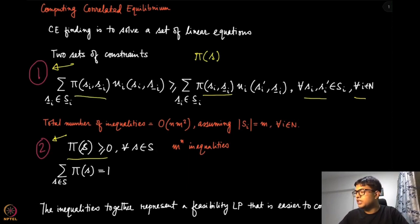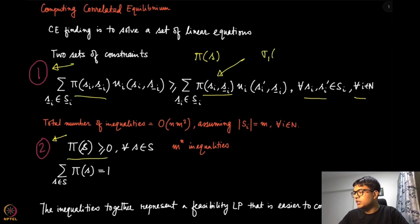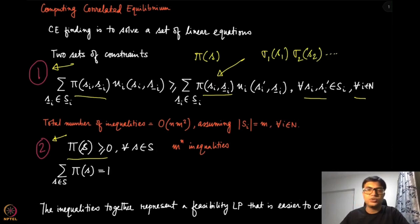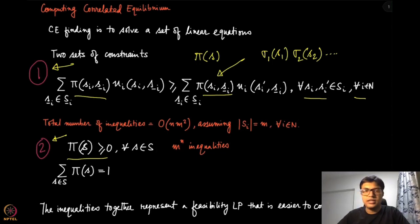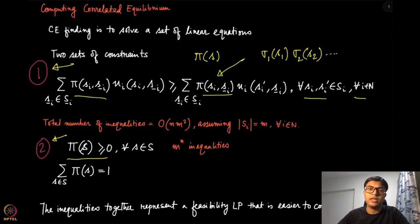Contrast this with the corresponding expression for mixed strategy Nash equilibrium, where we had σ₁(s₁) multiplied by σ₂(s₂) and so on. That gives rise to a product form of the variables, which is a non-linear optimization problem and not easy to solve. Here, all the inequalities are actually linear inequalities, making the problem of finding a correlated equilibrium a linear program.